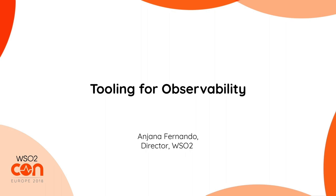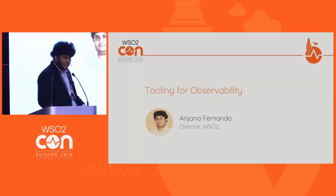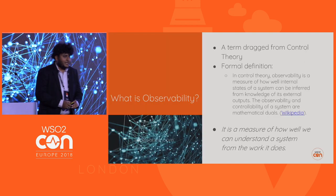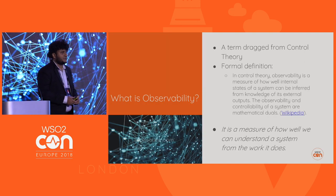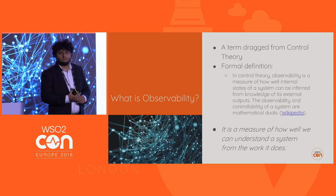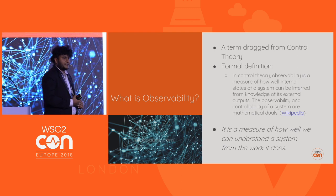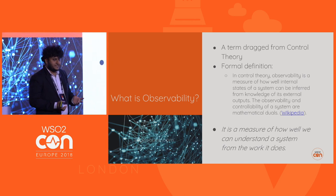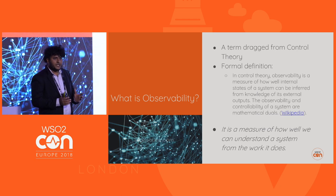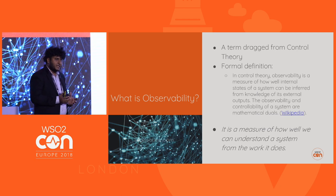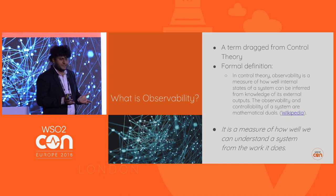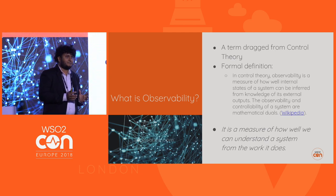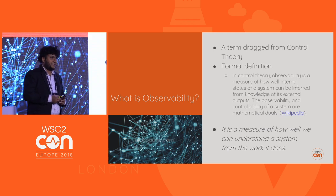Welcome to this session on tooling for observability. So what is observability? Observability is a term that comes from control theory. It basically means figuring out the internal state of a system by checking its external outputs. It's a measure of how well we can understand a system by looking at how it works.